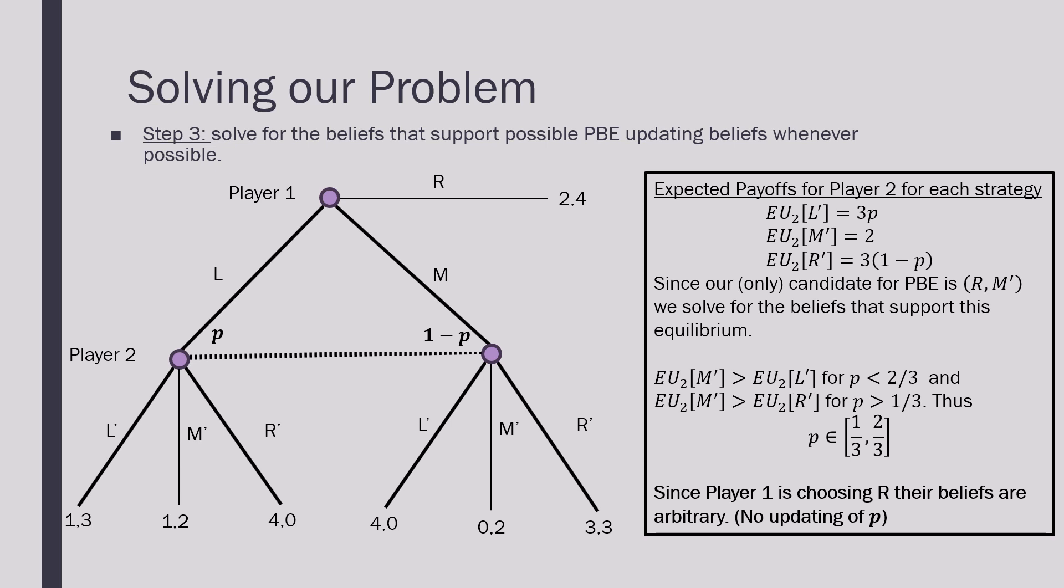And for M being greater than R here, that is going to be for every p greater than 1 third. Thus, the set of beliefs that are going to support this equilibrium is where p is on the interval between 1 third and 2 over 3.